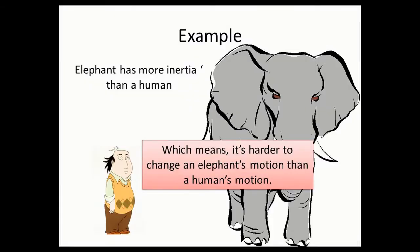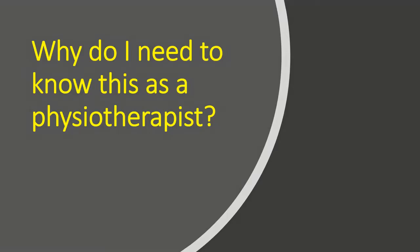An elephant has got more inertia than a human using the same argument. Why do we need to know this as physiotherapists?